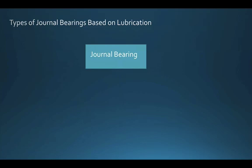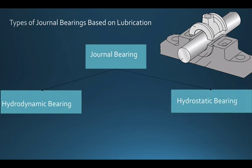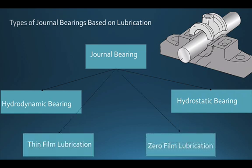The whole family of journal bearings is again divided into different categories based on the lubrication system used between the shaft and the fixed bearing. The first type is hydrodynamic bearing and the second is hydrostatic bearing. In between, we have thin film lubrication and zero film lubrication. I will explain how these bearings work and the difference between hydrodynamic and hydrostatic bearings in upcoming videos.